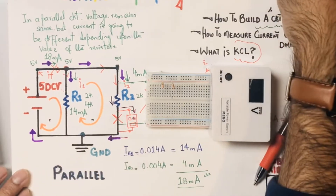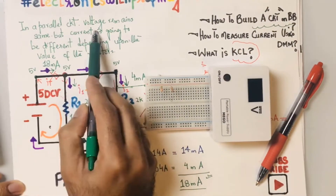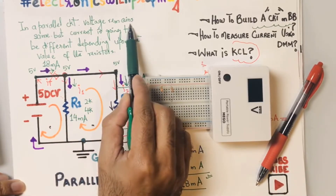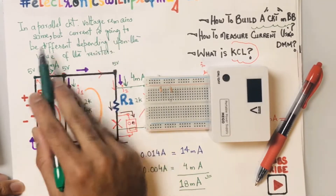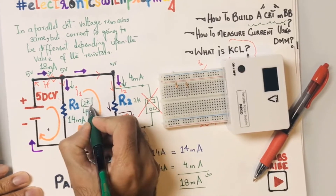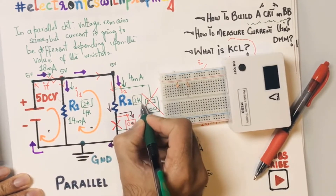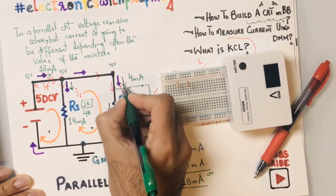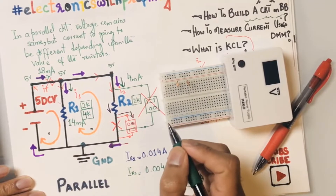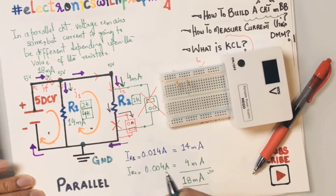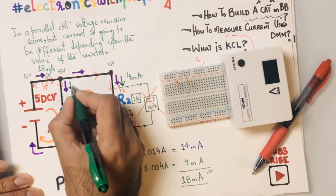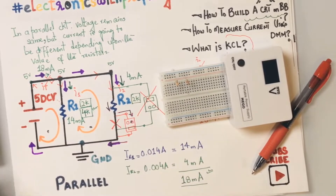This is something you should always remember: in a parallel circuit, voltage always remains the same, but the current is going to be different. Say both resistors are 2k — equal current flows through each. But if one is 4k and the other is 2k, more current will flow through R2 because it has less resistance than R1, which is 4k — twice as large.